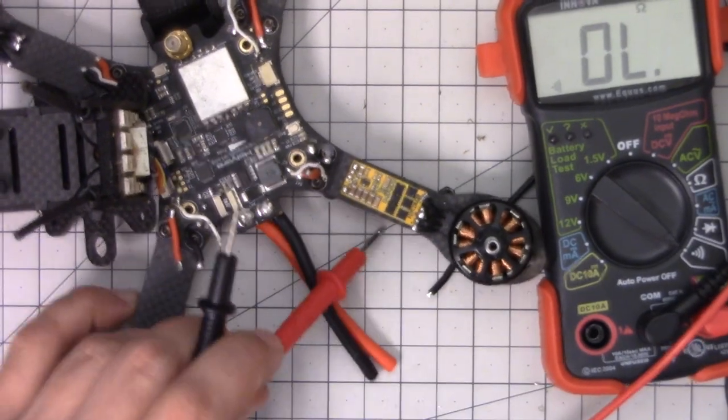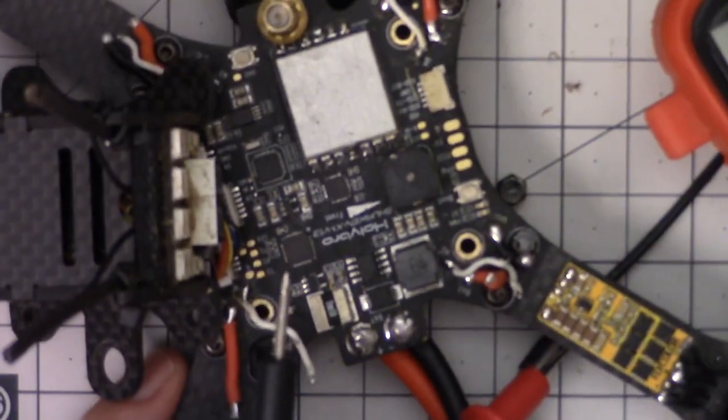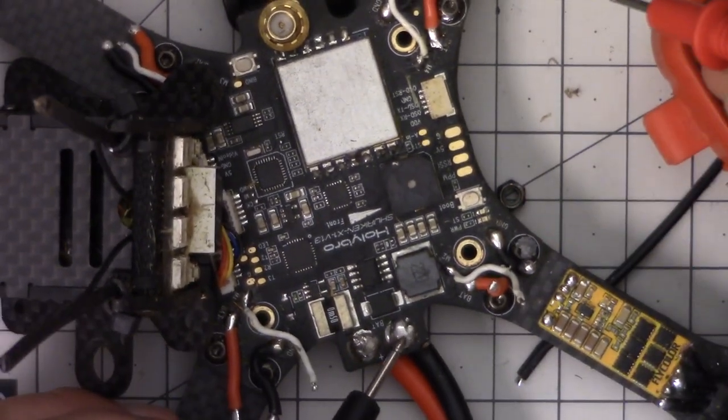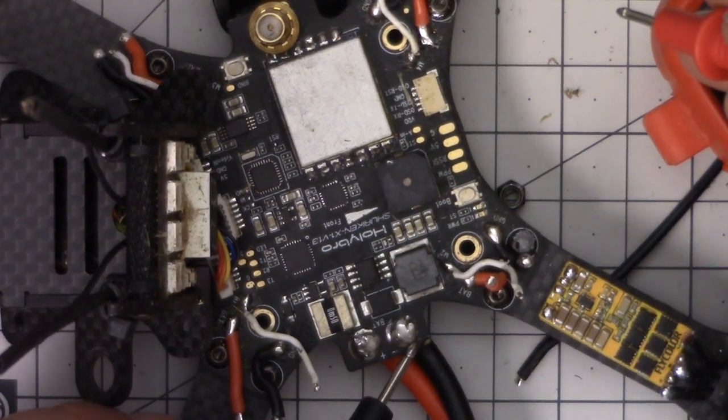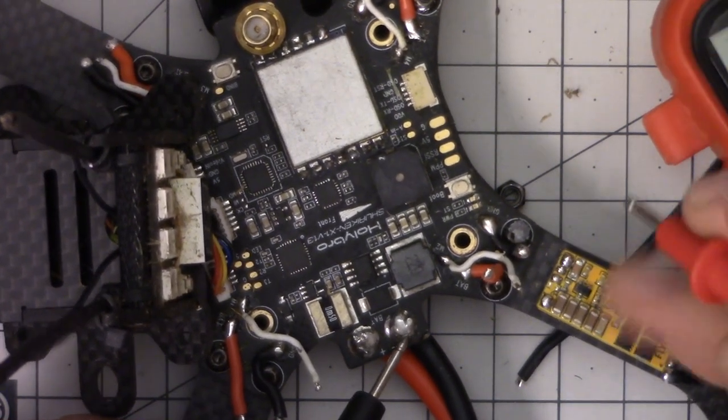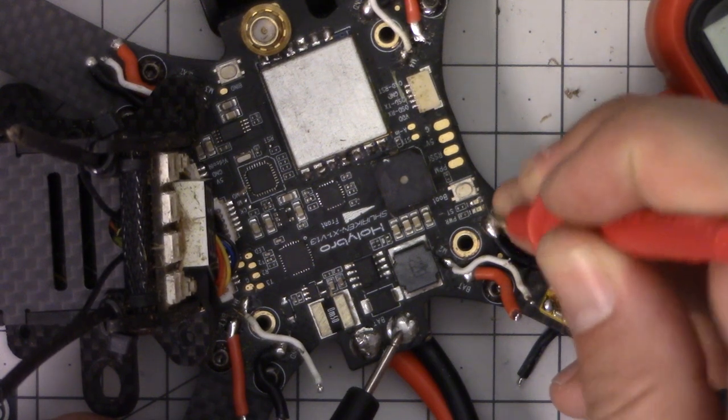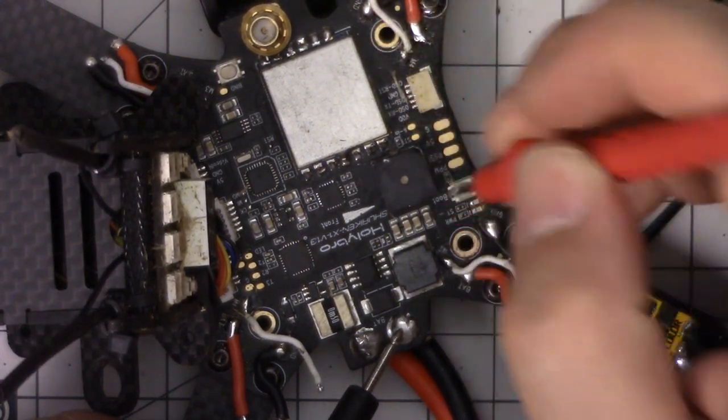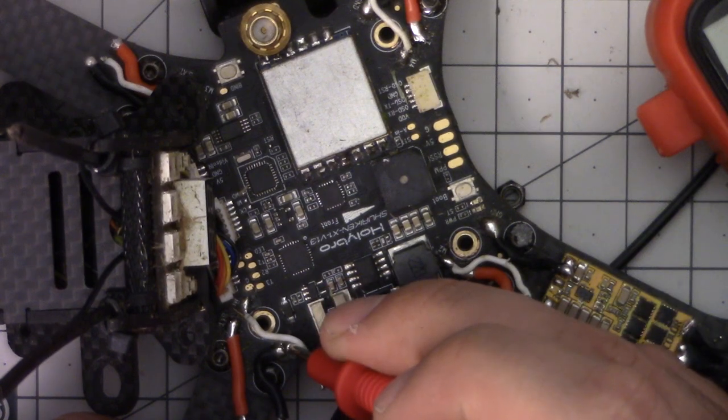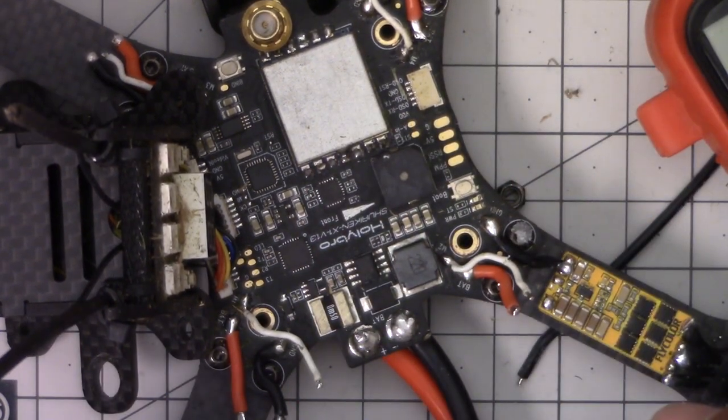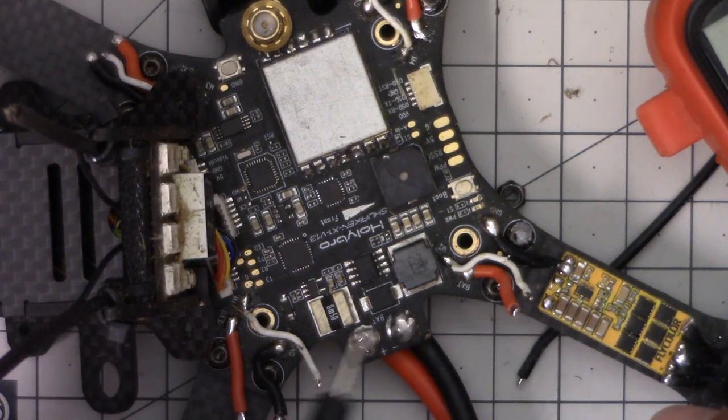So if I go to the PDB here on this copter and I touch the negative terminal, battery terminal, with one lead and I go around to the ESC terminals, what you'll see is I have continuity between all of the grounded pads. They all have continuity with each other and that's normal. The electricity flows to all of those locations. It's normal for ground to have continuity across the board.